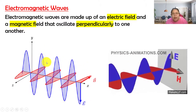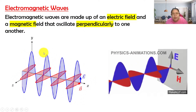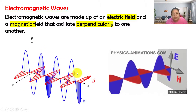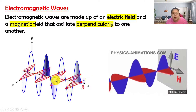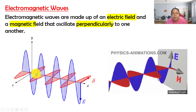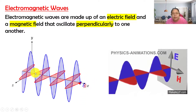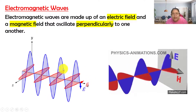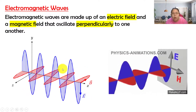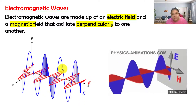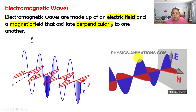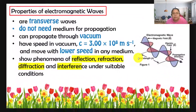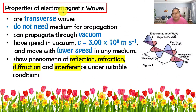In the diagram, the blue color represents the electric field and the red color represents the magnetic field. When they move, they are perpendicular to each other, and the direction of wave travel should be the same — going to the right-hand side.